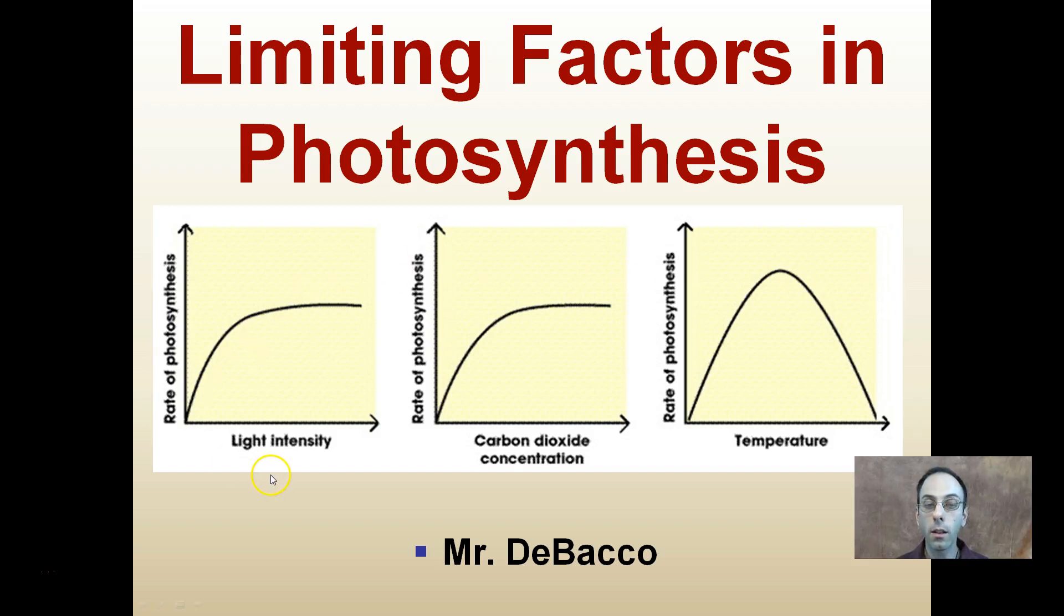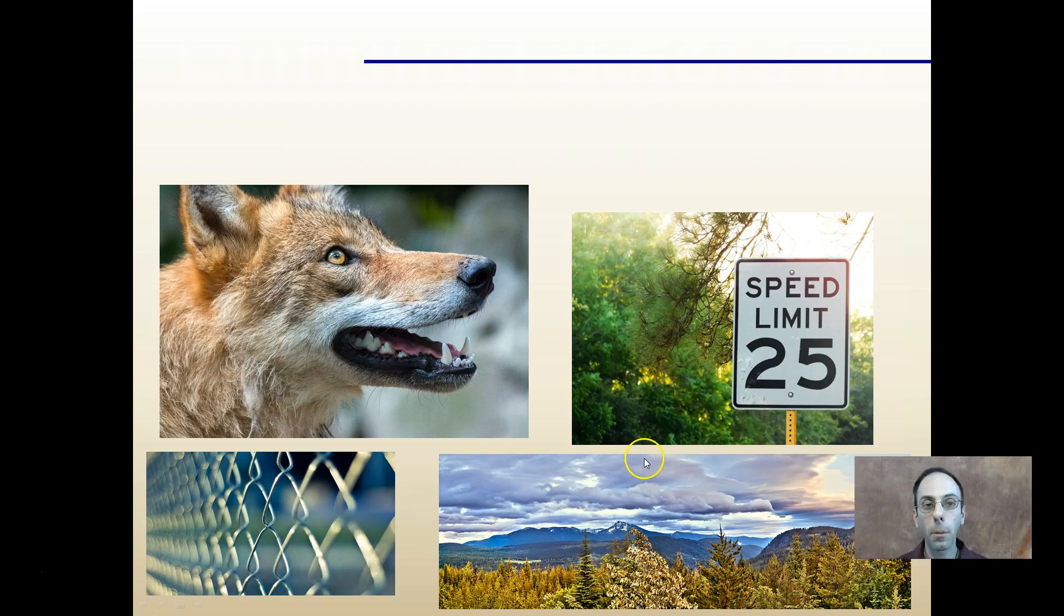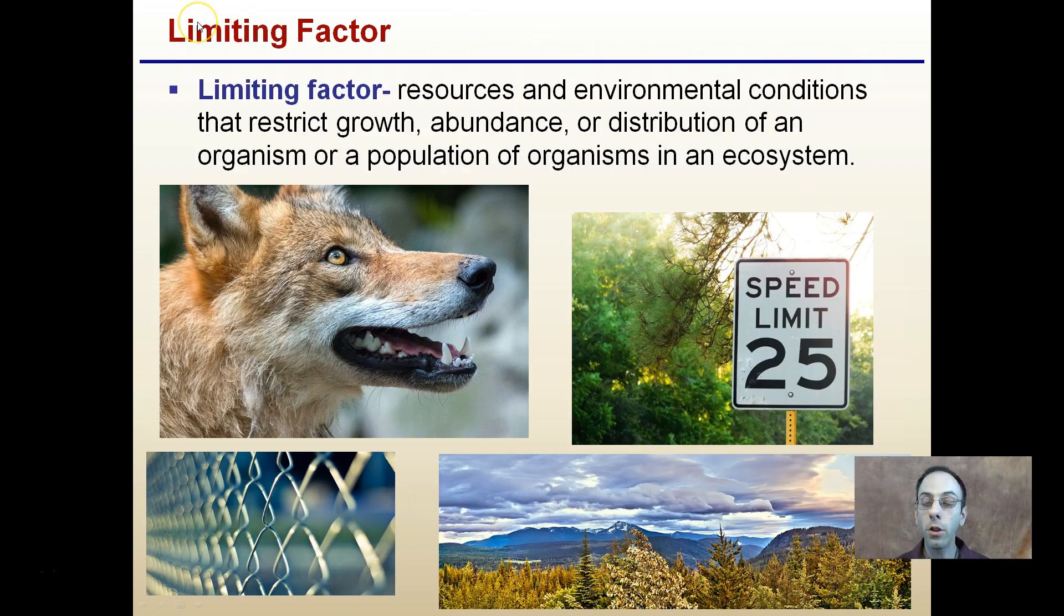Specifically, we'll look at light intensity, carbon dioxide concentration, and also temperature and how this impacts the rate of photosynthesis. Starting with limiting factor in the general sense, a limiting factor can be resources and environmental conditions that restrict growth, abundance, or distribution of an organism or a population of organisms in an ecosystem. We've talked about predators before, physical barriers, particular biomes, speed limits—all of these are limiting factors to an individual. We're now going to take this and look at more of a micro scale here.